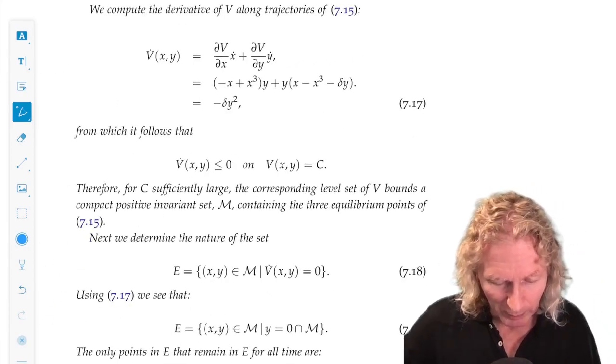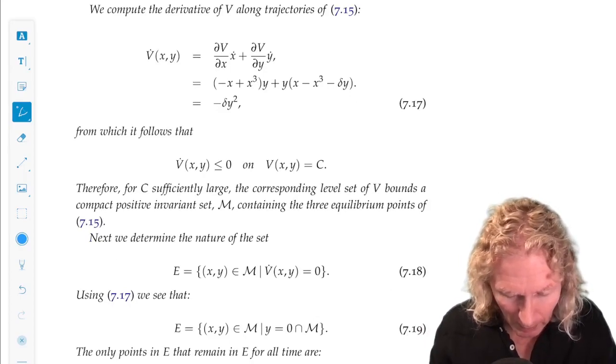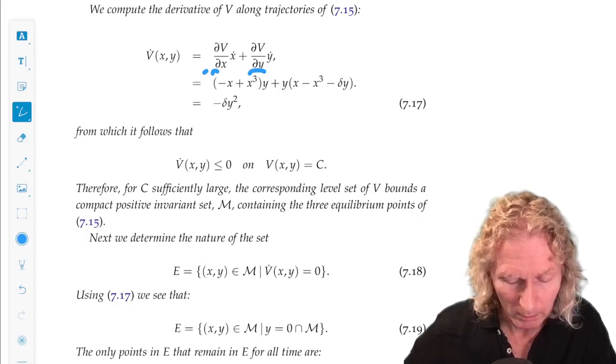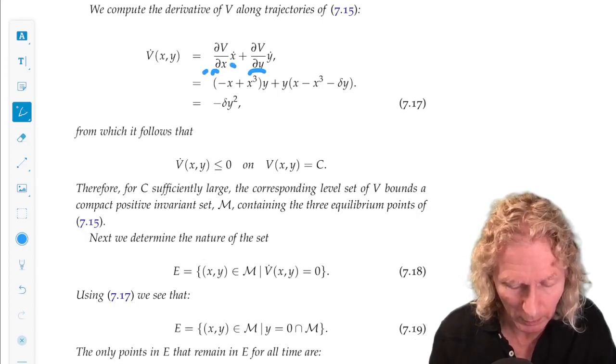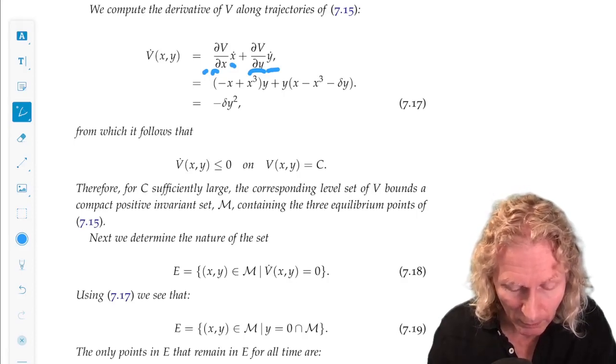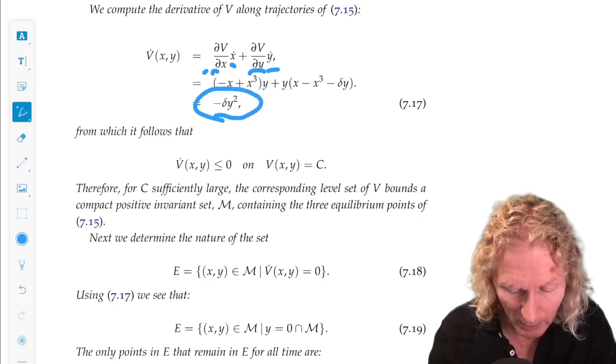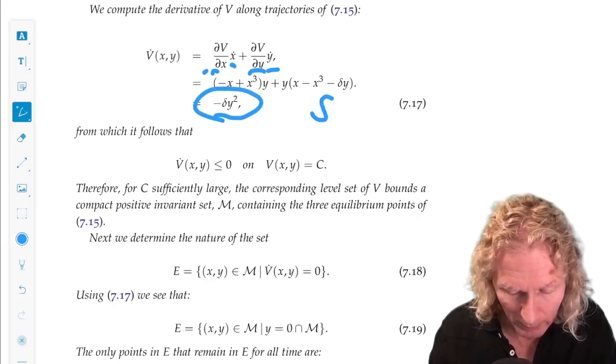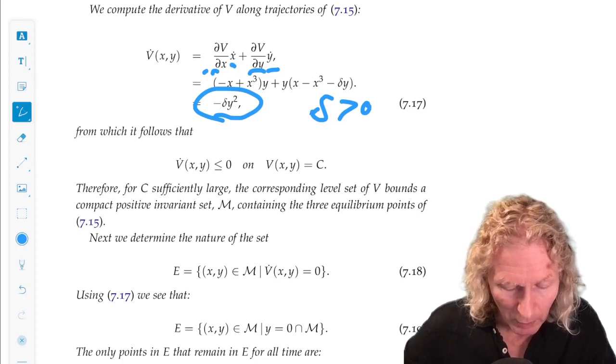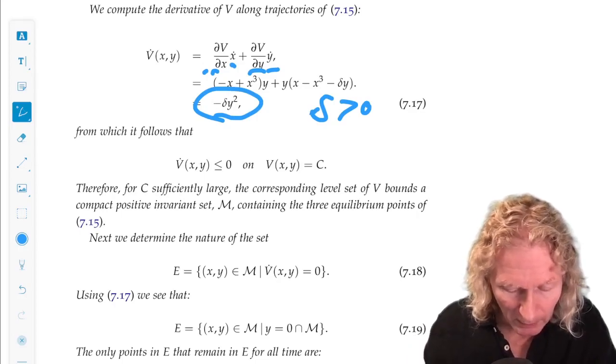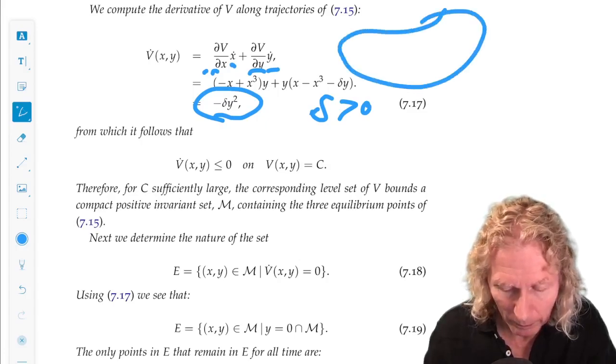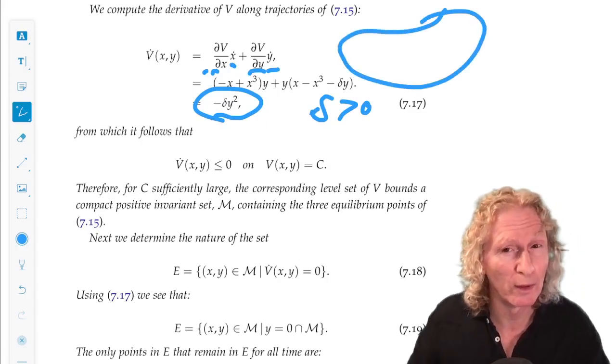Let's compute the time derivative along trajectories. We compute the gradient of that weird function I just showed you, and we take the dot product with the vector field, our example we did in the last chapter. You can see that V̇ = -δy², and now we know why we're going to want δ > 0 in this case.